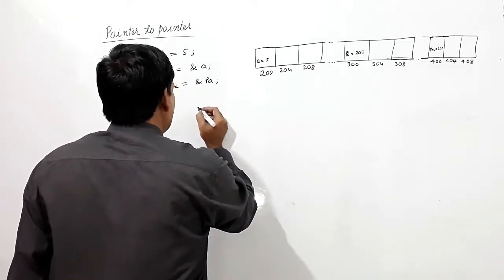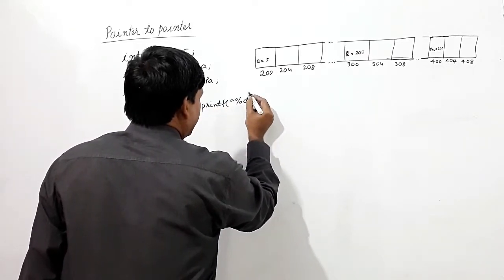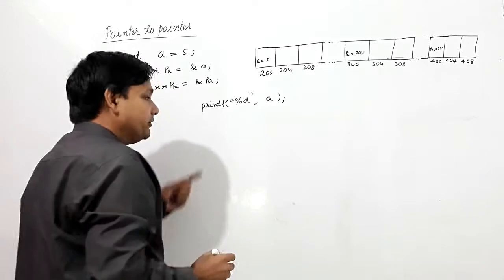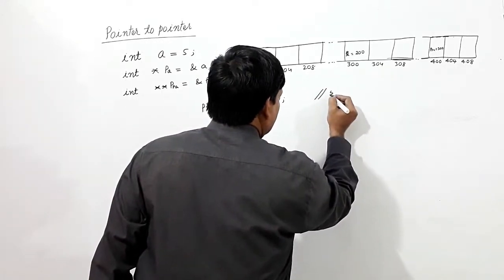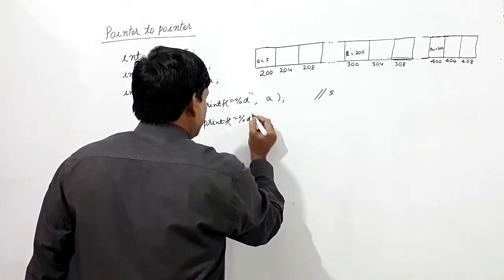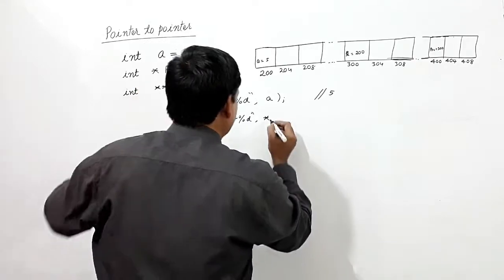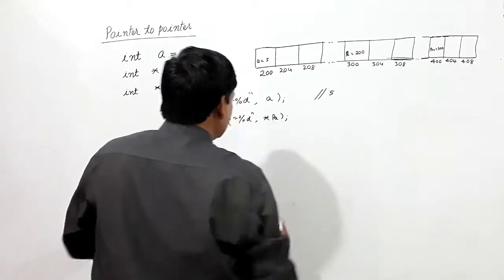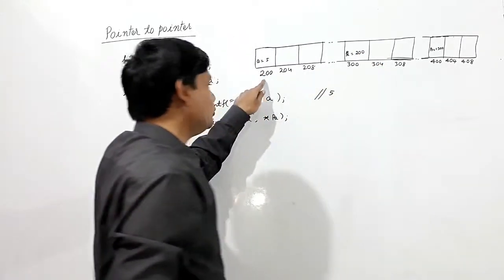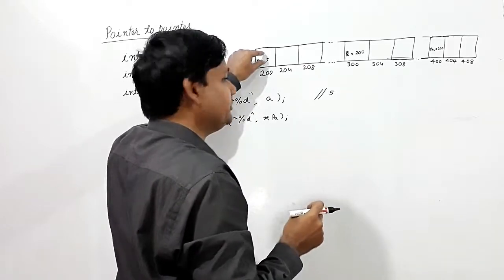If I take printf percent d with *pa — 'pa' means 200, we reach address 200 and the indirection operator is used, which means we go into that cell. So the output will be 5.